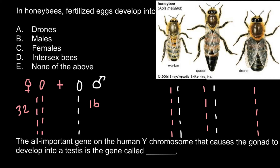Worker and queen, as you see, are very different morphologically, but genetically they are the same. The morphological difference is due to a different type of food that the larvae will feed on. The queen will feed on royal jelly, which is a special type of honey, so she develops differently. The different morphology is not due to genetics but due to environmental influence — feeding is a type of environmental influence.